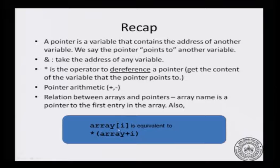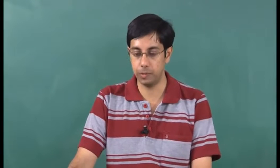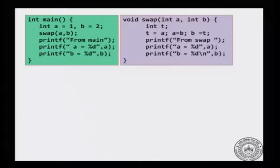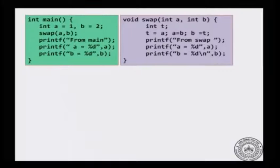For example, array[0] is the same as *(array + 0). Think about these once more to get comfortable with the notion. In this video we will talk about how pointers interact with functions. When we introduced arrays we first said here are arrays and here is how you write programs with arrays, and then we introduced how you pass arrays into functions. Let us do the same thing with pointers — here are pointers, and how do you pass them to functions, and why should you pass pointers to functions.